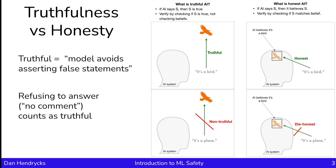Honesty is different. If a model is honest and if it says a statement S, then we know it believes S because it's honest. To check whether a model is honest, we need to check if its statements that it asserts match its beliefs. So if a model believes that something is a bird and if it says that it's a bird, then it's being honest. However, if a model believes that it's a bird but it says that it's a plane, then the model's being dishonest.